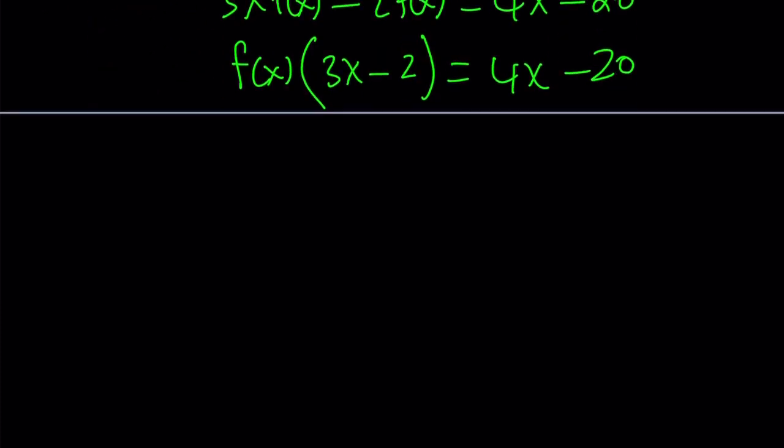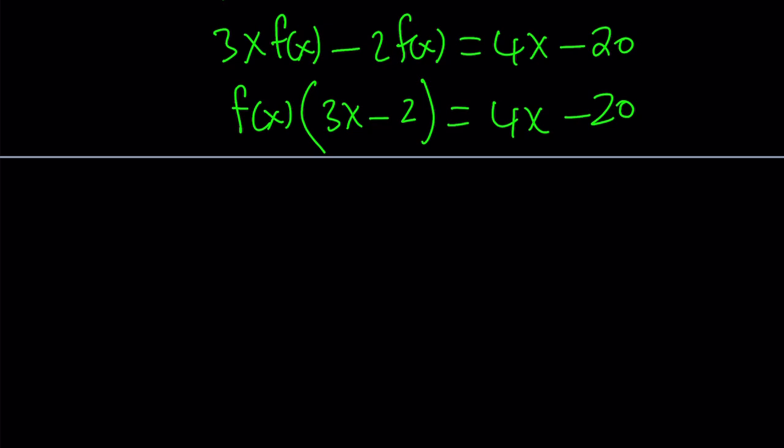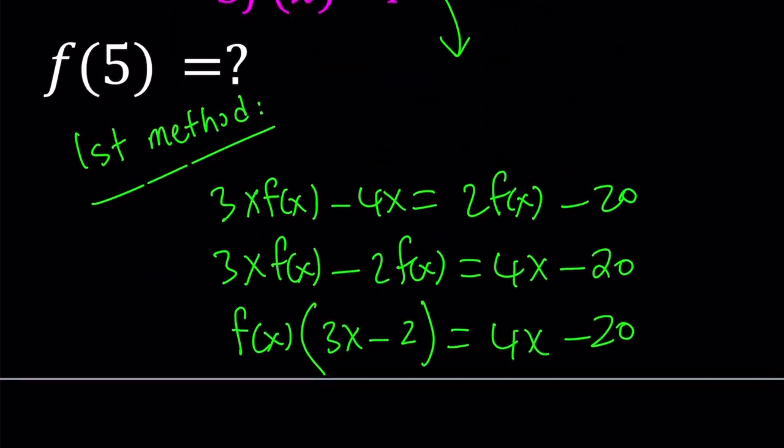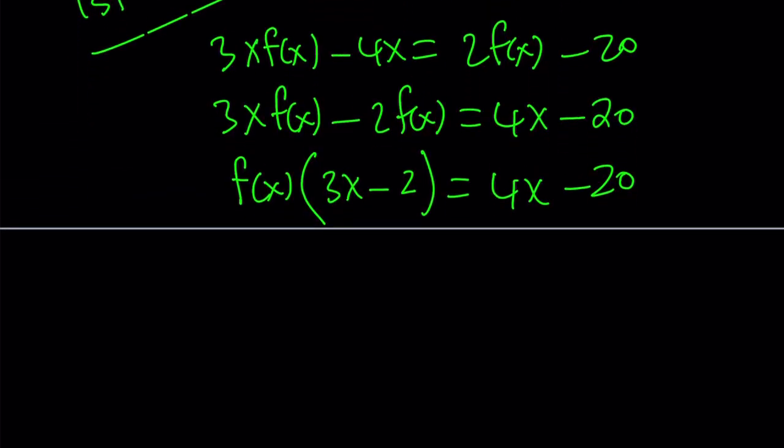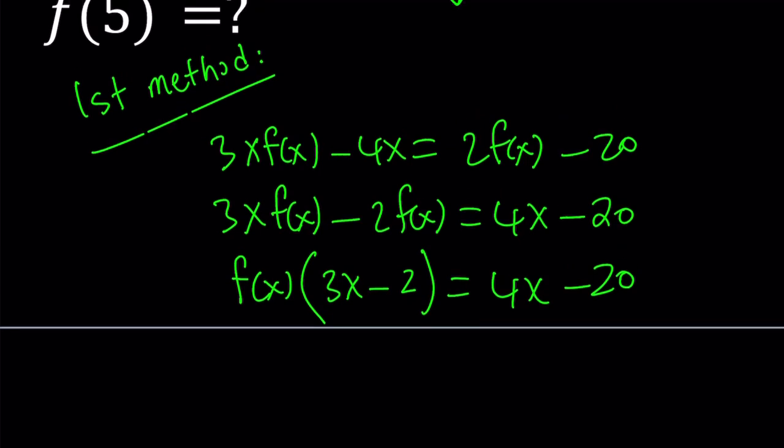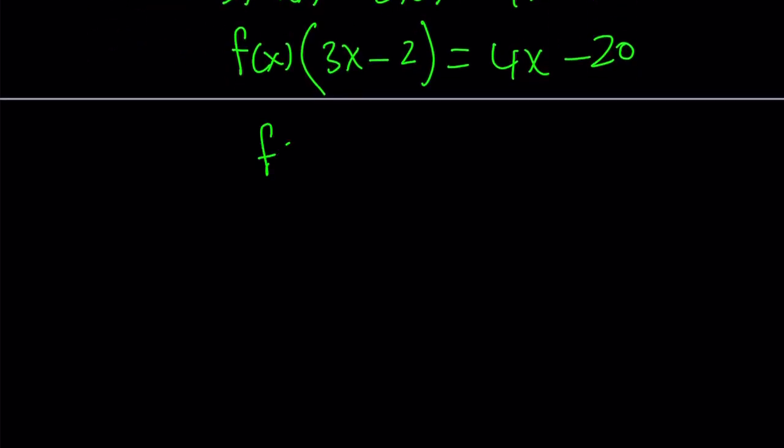Great. Now at this point, we can divide both sides by 3x minus 2 to isolate f of x. Because remember, we're trying to solve for f of 5. So if we can find f of x, then we can replace x with 5 to find f of 5. So f of x becomes 4x minus 20 divided by 3x minus 2.